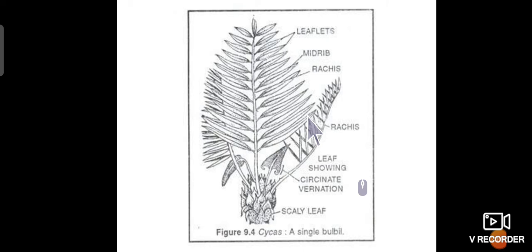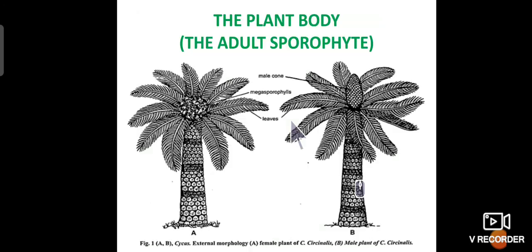Young plants produce a single small leaf with just one or two pairs of leaflets, whereas the number of leaflets increases as the plant matures. A single leaf of an old plant may have about 80 to 100 pairs of leaflets in Cycas circinalis, about 50 to 60 pairs in Cycas rumphii, and more than 100 pairs in Cycas revoluta. Old plants produce a large number of foliage leaves in the form of a single crown.